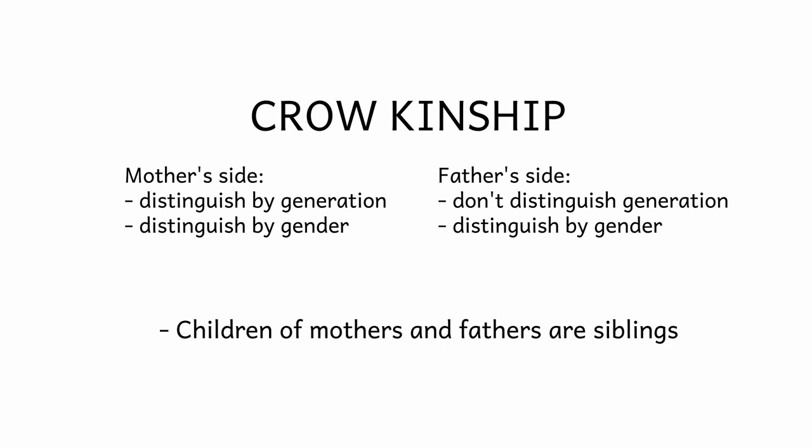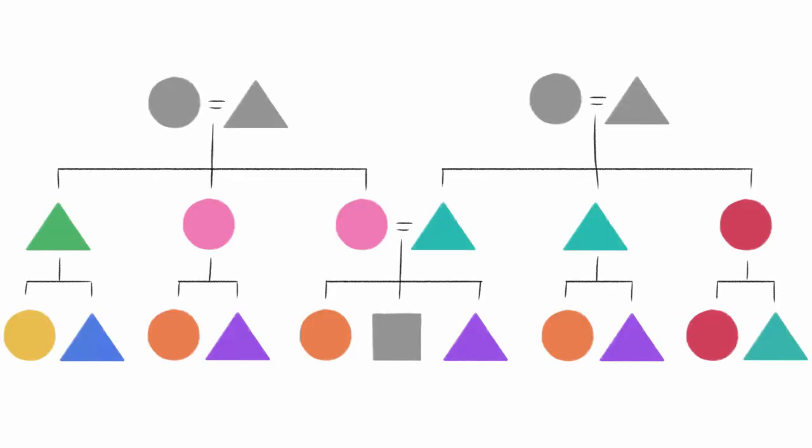The Crow system is very similar. It's basically the matrilineal version. It's more descriptive on the maternal side, and more classificatory on the paternal side.